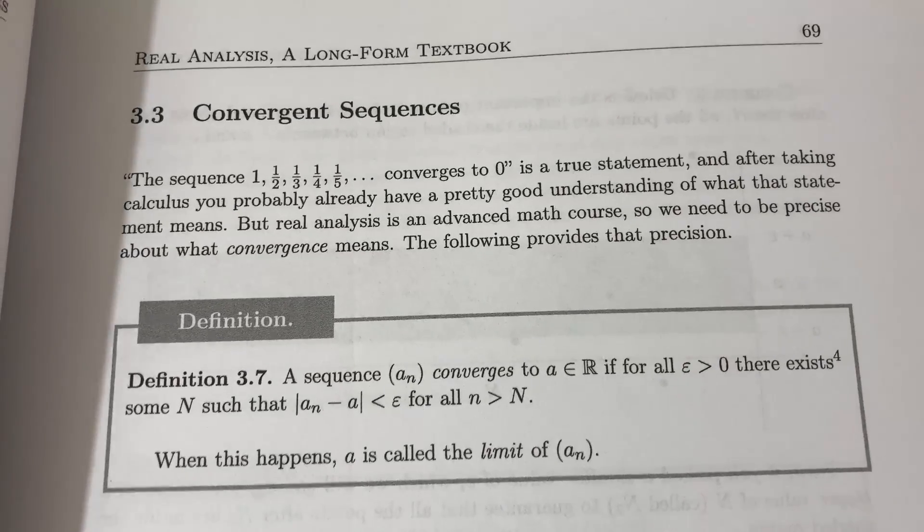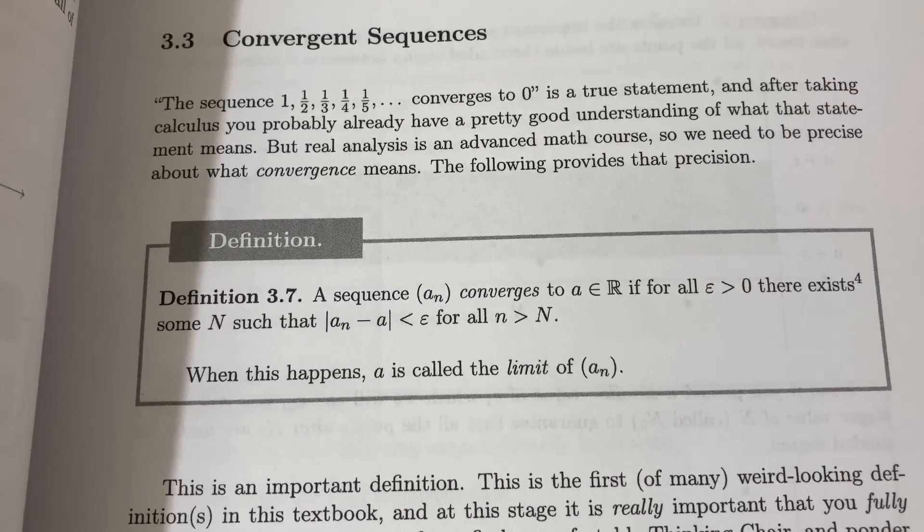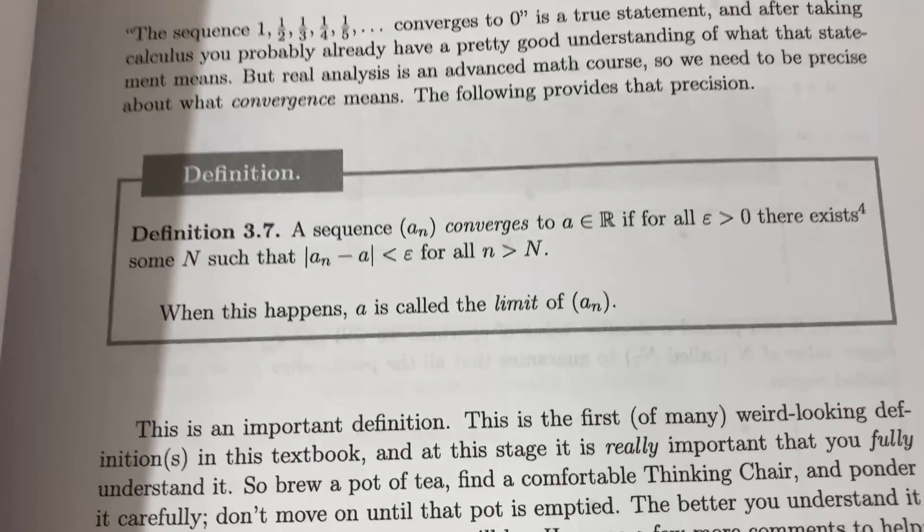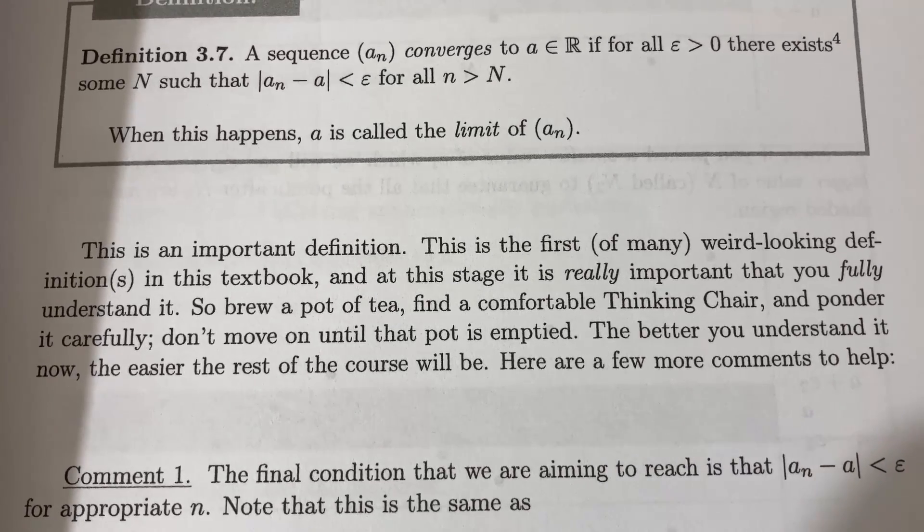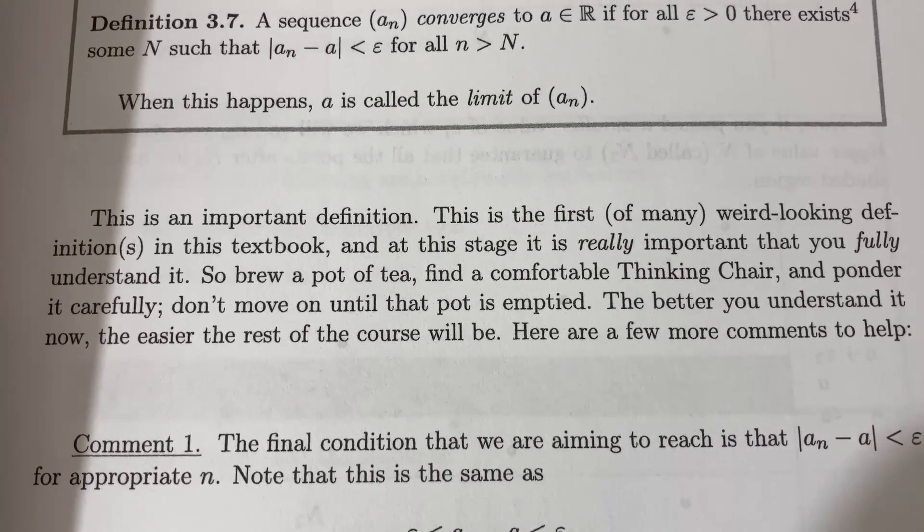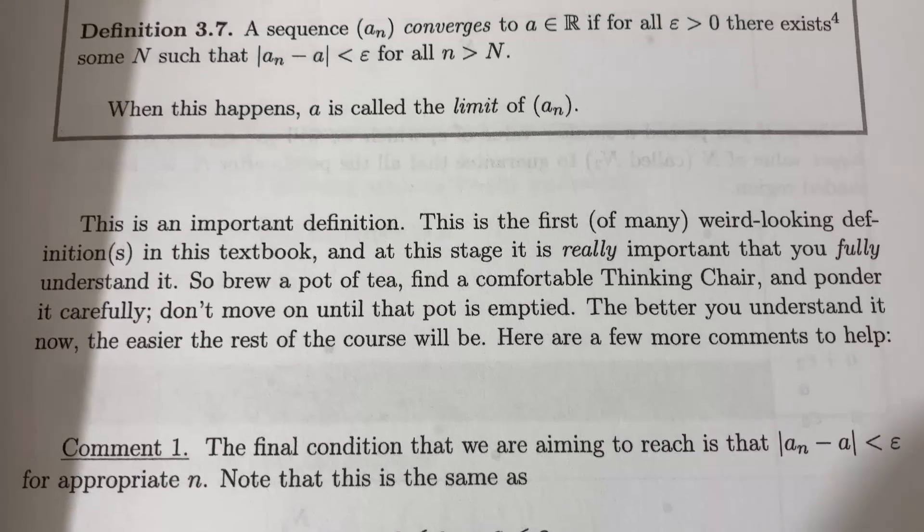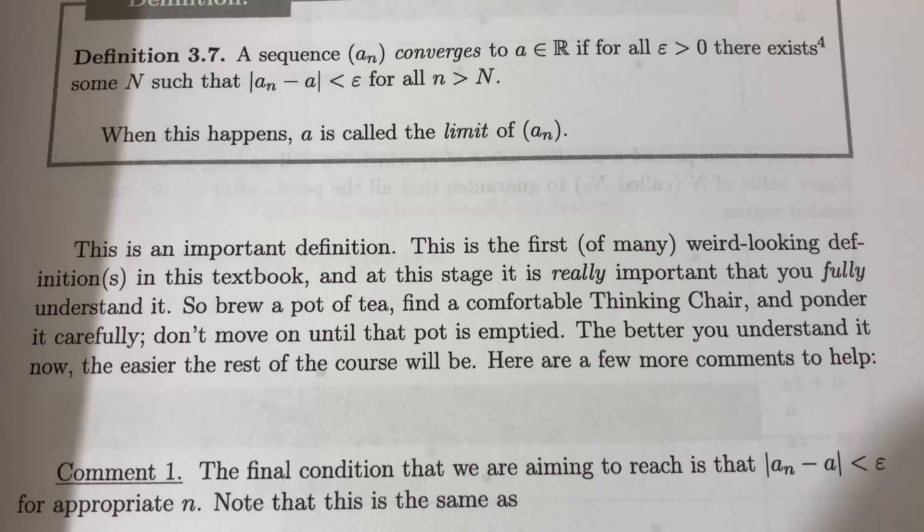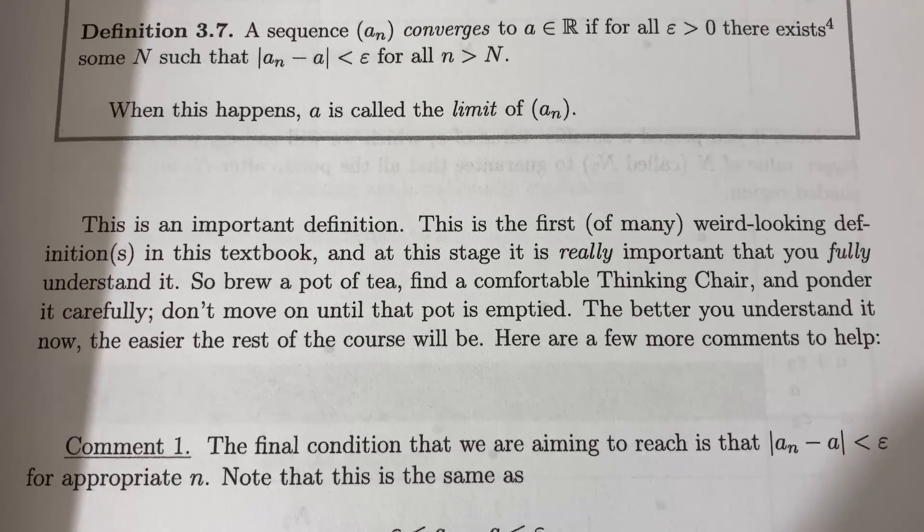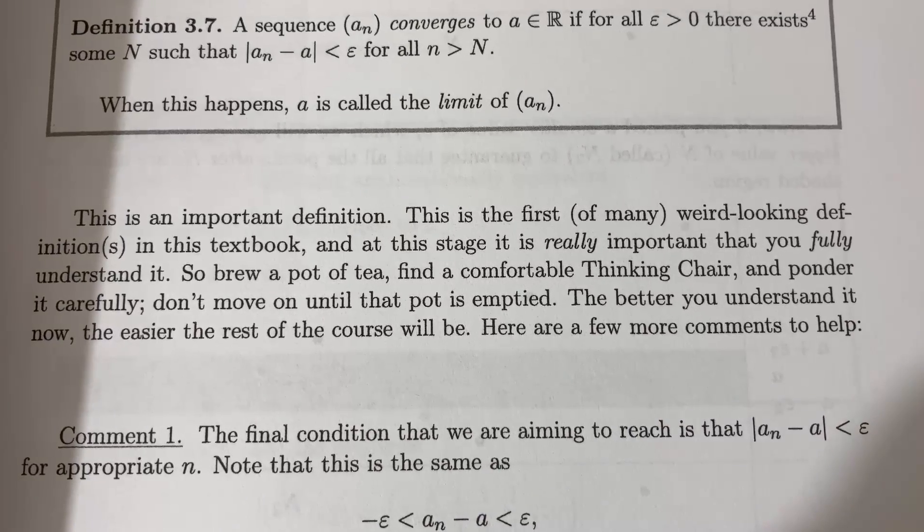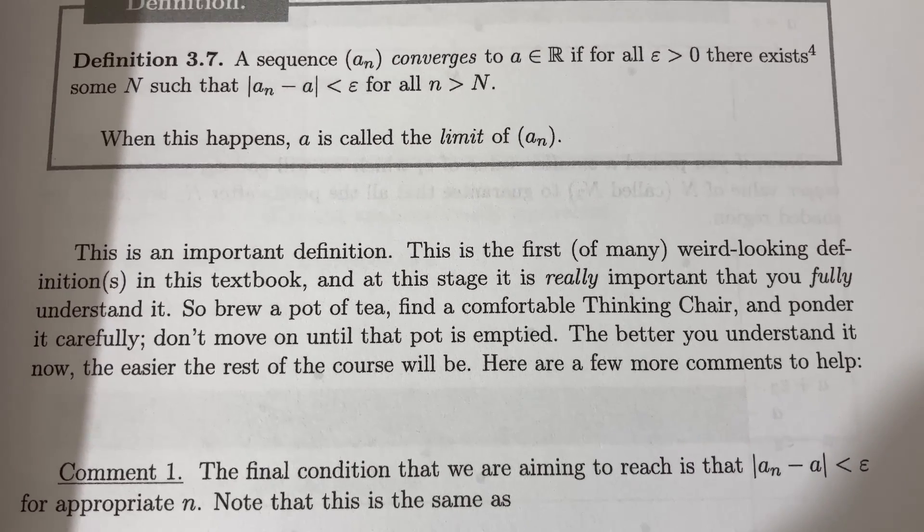This is definitely a book that you can buy and read and learn from on your own. Here's where he talks about convergent sequences. So he gives the definition. And then he says the following, this is an important definition. This is the first of many weird looking definitions in this textbook. And at this stage, it is really important that you fully understand it. So brew a pot of tea, find a comfortable thinking chair and ponder it carefully. Don't move on until that pot is emptied. The better you understand it now, the easier the rest of the course will be. Here are a few more comments to help.